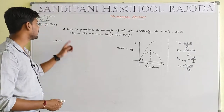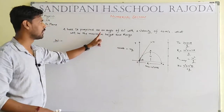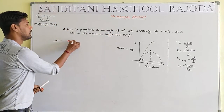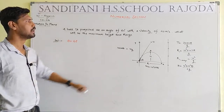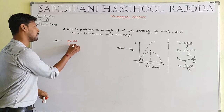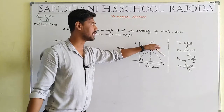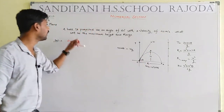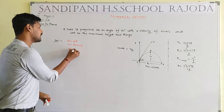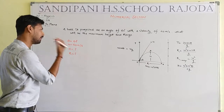Now we take the second numerical. A ball is projected along a projectile path at an angle of 60 degrees, so theta = 60°. The initial velocity u = 40 m/s. We have to calculate the maximum height H and the range R.